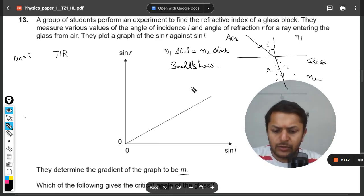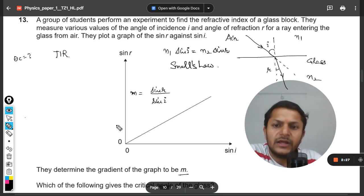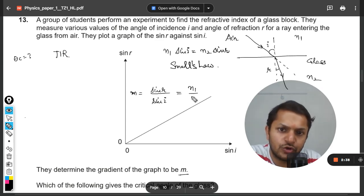Now let us move next. So the slope of this will be y divided by x, so it is going to be sine r divided by sine i. Sine r divided by sine i will be n1 divided by n2.